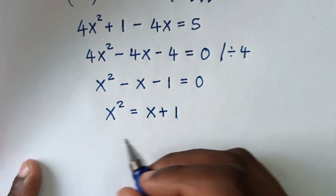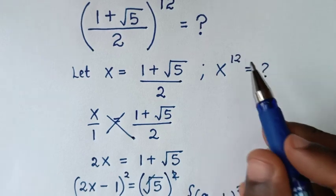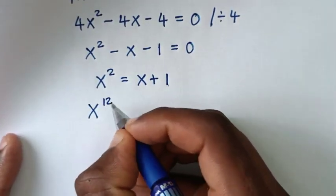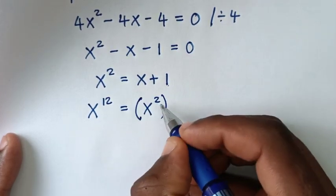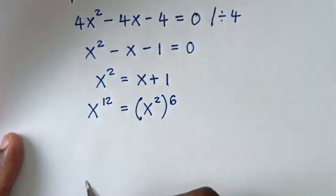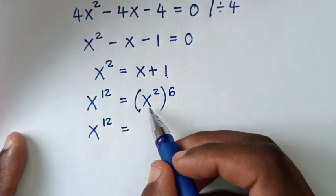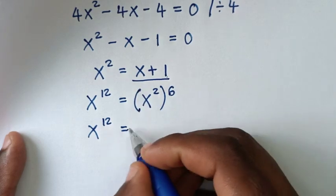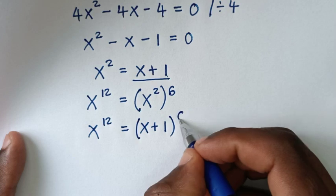Now using this equation x squared equals x plus 1, to find x to the power of 12, we note that x to the power of 12 equals (x squared) to the power of 6, because power 2 times power 6 is power 12. Then substituting x squared equals x plus 1, it becomes (x plus 1) to the power of 6.